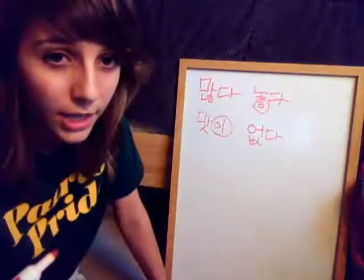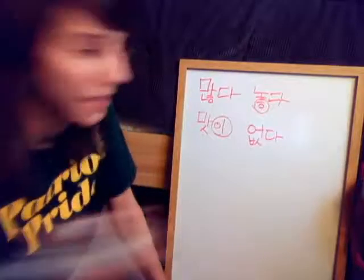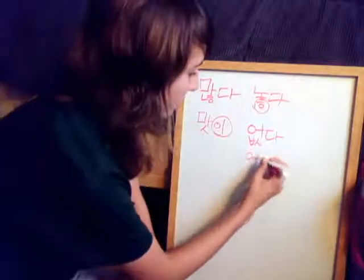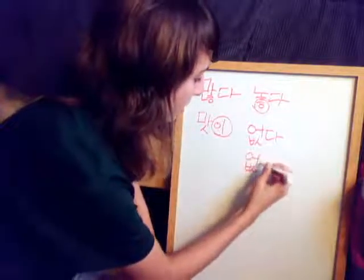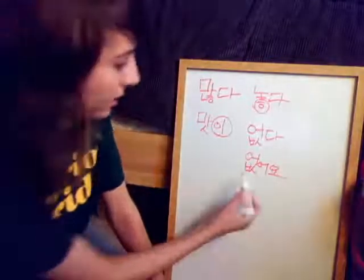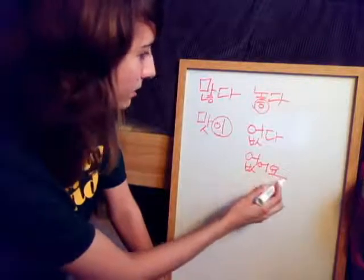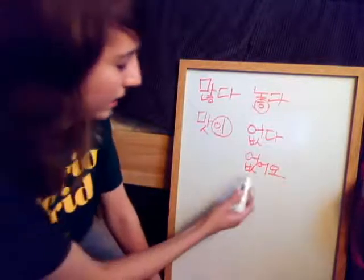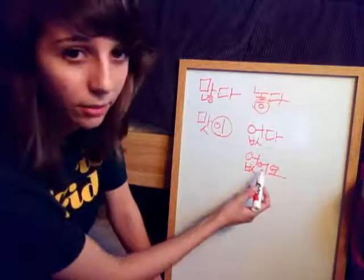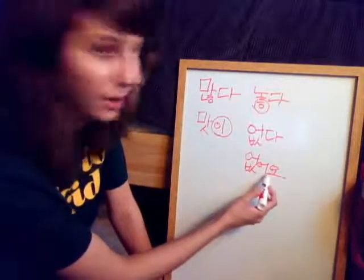But when you conjugate this into, for example, present tense, which should be op-so, it opens up. So op-so. Because now that there's another vowel next to it, then you can complete the sound.